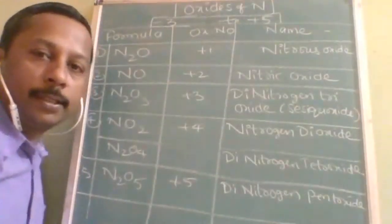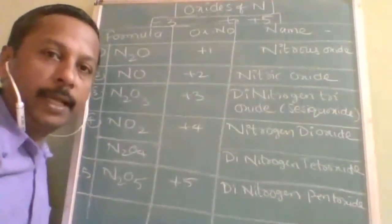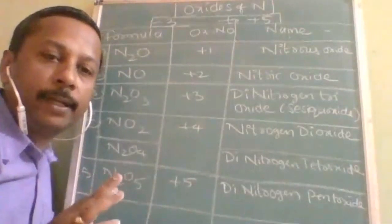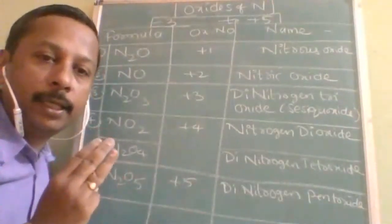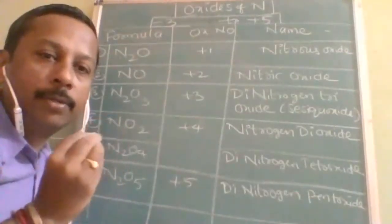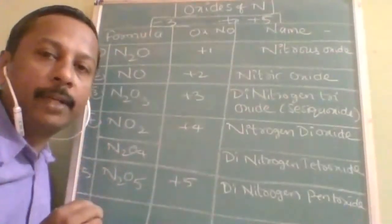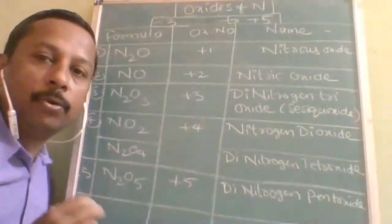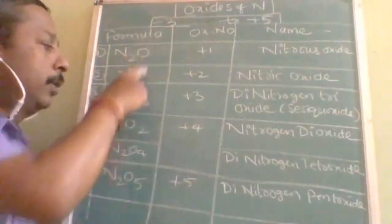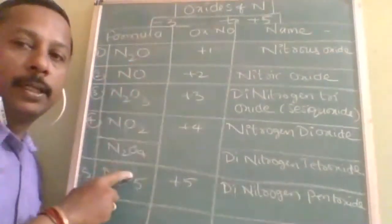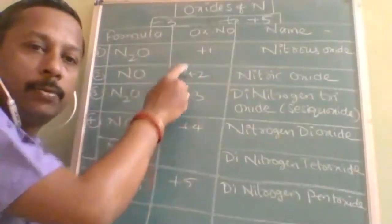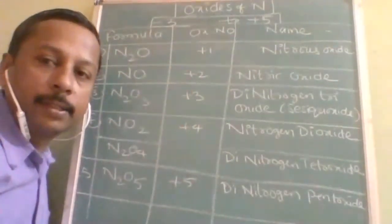Nitrogen can gain stability in two different ways: by gaining 3 electrons it will gain octet, and by losing 5 electrons it will gain duplet. In both ways it can do it. But when it combines with oxygen, it shows only a plus oxidation state. What oxidation state? Only plus oxidation state.